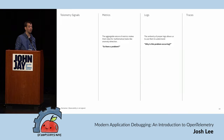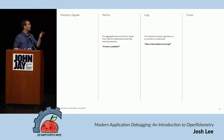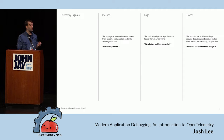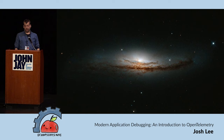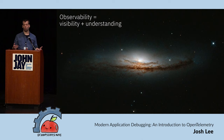Metrics are great for answering 'is there a problem?' — they give us alerts, tell us there's smoke, and we know there's fire. Logs are great once we have the right log message — they tell us exactly what the problem is, like 'database connection not available' or 'syntax error.' But finding that log message is the challenge. That's where traces come in: where is the problem occurring, and most importantly, who is the domain expert that can actually help address it?